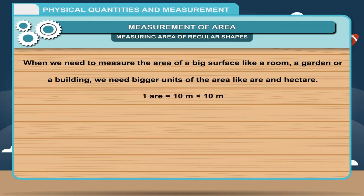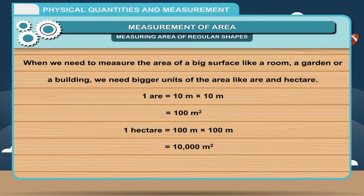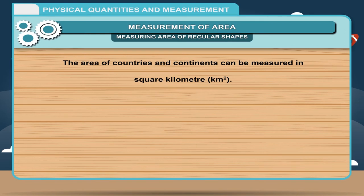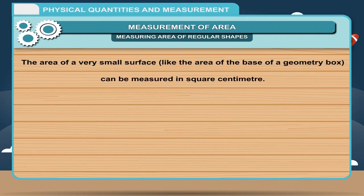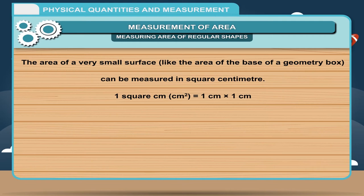The areas of countries and continents can be measured in square kilometers. 1 km² = 1 km × 1 km = 1000 m × 1000 m = 1,000,000 m². The area of a very small surface like the base of a geometry box can be measured in square centimeters. 1 cm² = 1 cm × 1 cm = 10 mm × 10 mm = 100 mm².